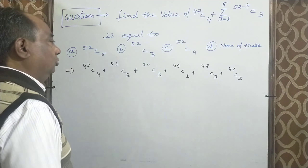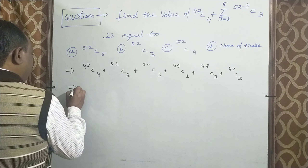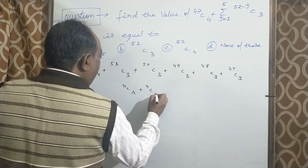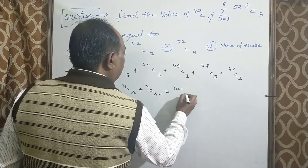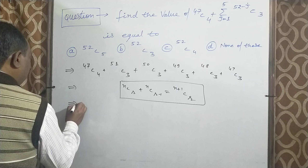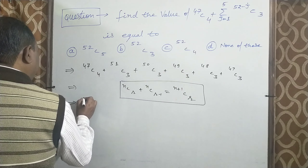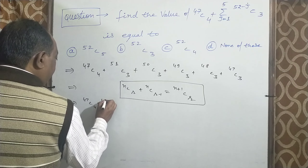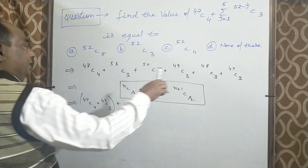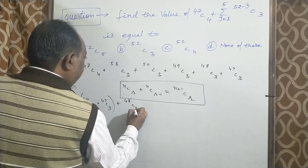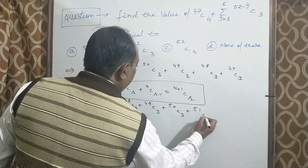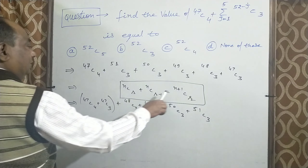अब हम Pascal rule से इस question को solve करते हैं। Pascal rule: NCR plus NCR minus 1 equal N plus 1 CR। इस formula का use करेंगे। तो सबसे पहले 47C4 plus 47C3, अब 48C3 plus 49C3 plus 50C3 plus 51C3। इसको Pascal rule के अनुसार apply करते हैं।